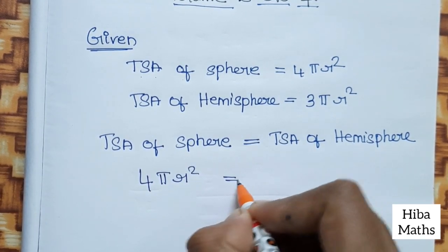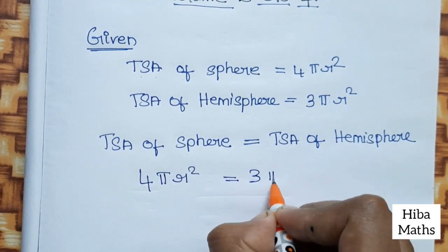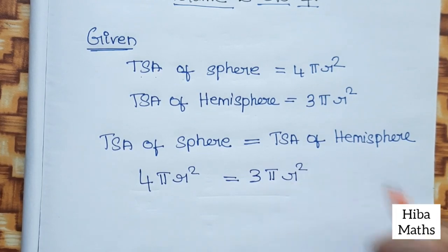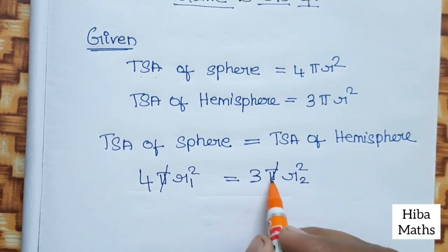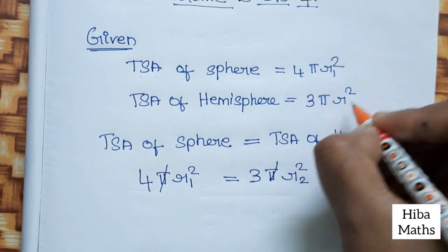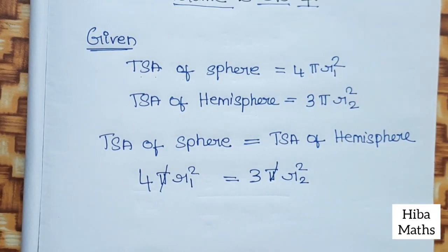4πR₁² equals 3πr₂². The two values have pi, so pi and pi cancel.